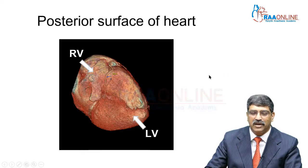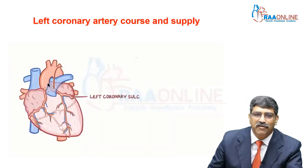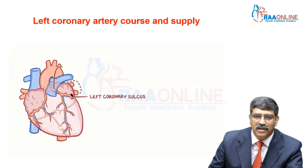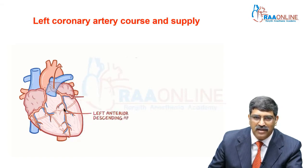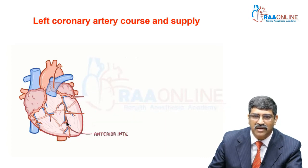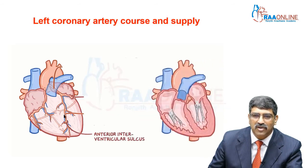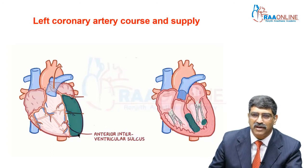So you have the left main coming between the pulmonary artery and the left atrium; this is the circumflex, this is the left anterior descending, and this is the left crux where the circumflex runs. The left anterior descending runs in the interventricular groove between the left and right ventricles, supplying the anterior two-thirds of the septum, the anterior papillary muscle, and the anterior part of the left ventricle.